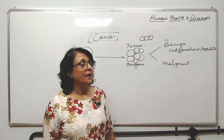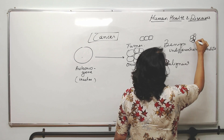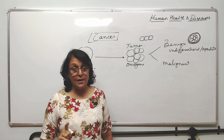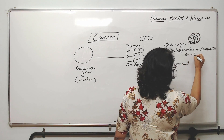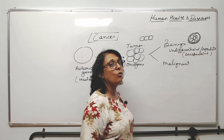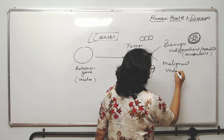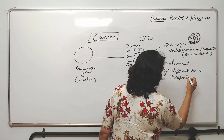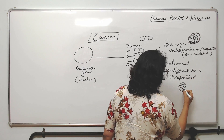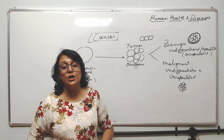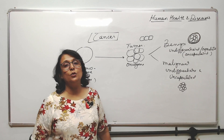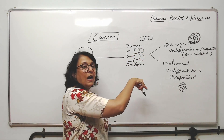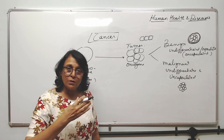Benign tumors are described as undifferentiated and encapsulated — meaning the mass of cells is surrounded by a thick fibrous sheath, enclosed in a capsule. Malignant tumors are undifferentiated and uncapsulated — there is a mass of cells with no cover, no capsule, no sheath. This is the basic difference between the two types of tumors.